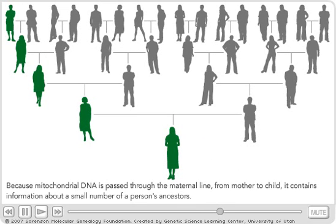Because mitochondrial DNA is passed through the maternal line, from mother to child, it contains information about a small number of a person's ancestors.